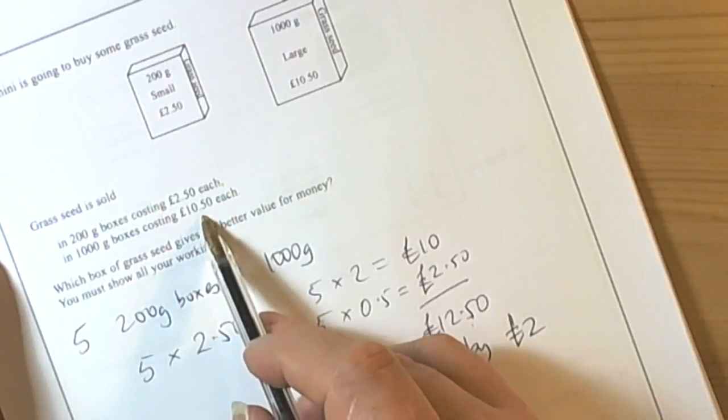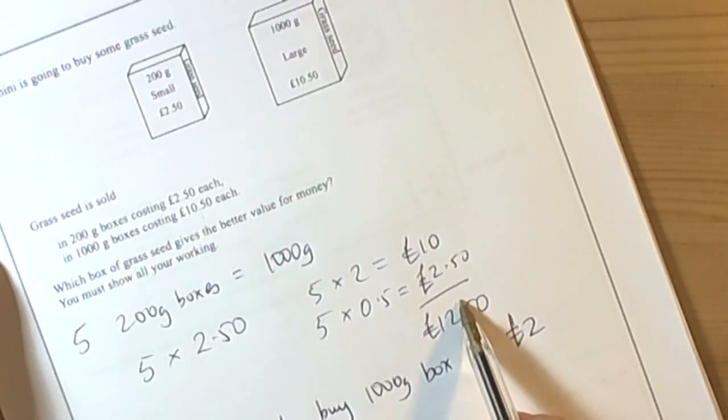So take away the £12.50, take away the £10.50, it's £2 cheaper to do the 200g boxes.